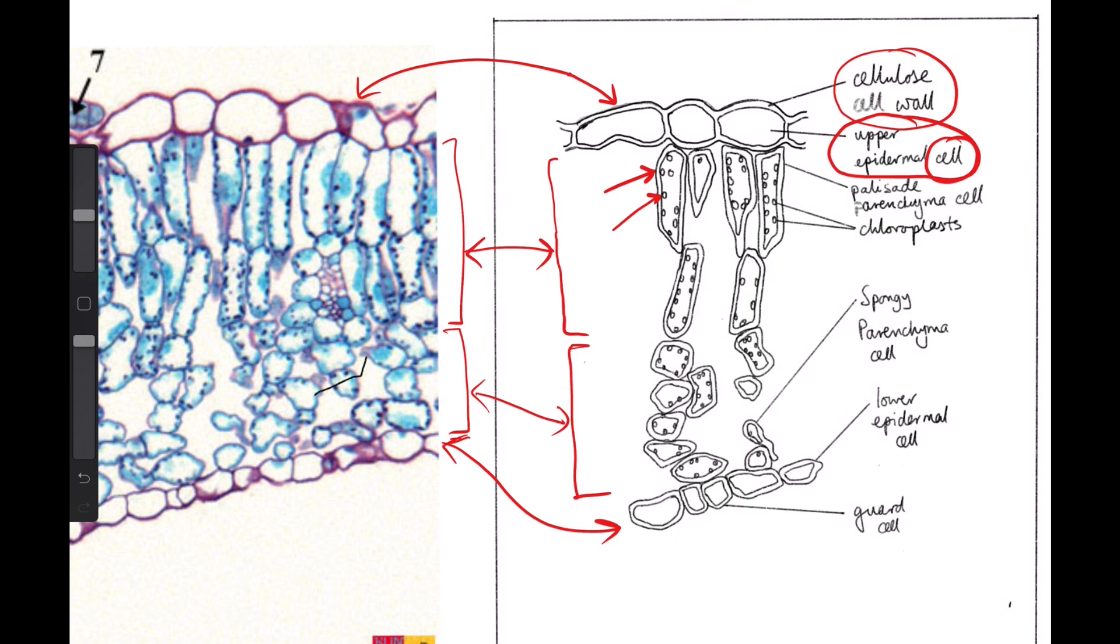In this case, we are labeling palisade parenchyma cells, not the palisade parenchyma as a tissue. So you see that difference. And we are also able to label individual subcellular structures, in this case, the chloroplasts. But again, we are labeling the spongy parenchyma cell. We are labeling the lower epidermal cell.